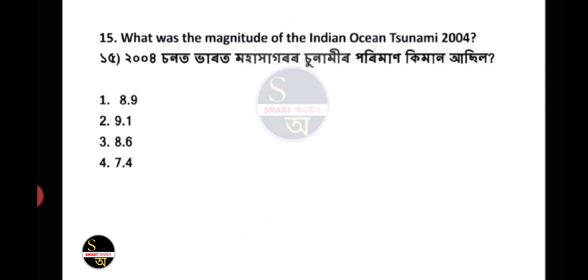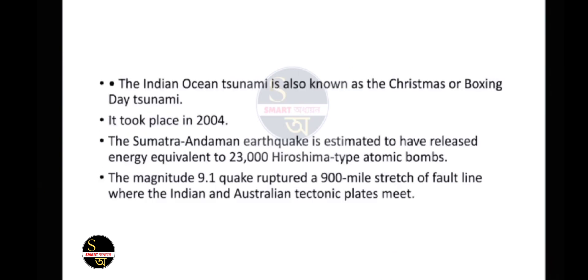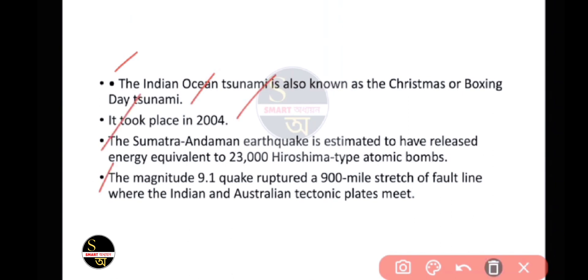Major states where these forests are found include Madhya Pradesh, Uttar Pradesh, Chhattisgarh, Odisha, and some parts of Maharashtra. Question number 15: What was the magnitude of the Indian Ocean tsunami of 2004? The answer is 9.1. The Indian Ocean tsunami is also known as the Christmas or Boxing Day tsunami.